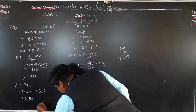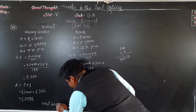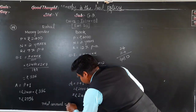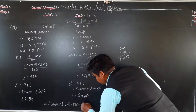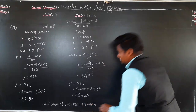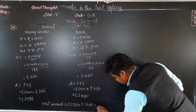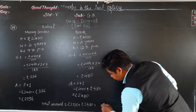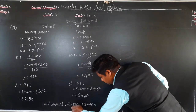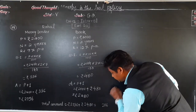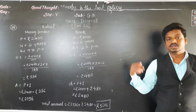The total amount which Rahul has to repay is rupees 2736 plus rupees 2480. Adding: 6 plus 0 is 6, 3 plus 8 is 11 — carry 1 — 7 plus 4 is 11 plus 1 is 12 — carry 1 — giving a total of rupees 5216.